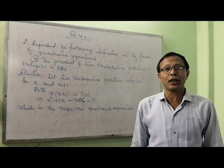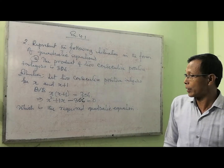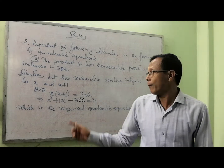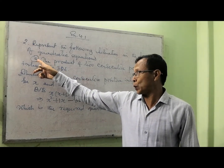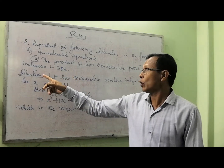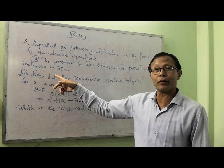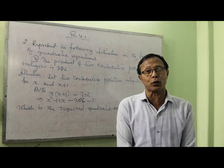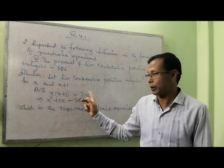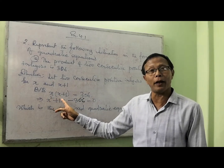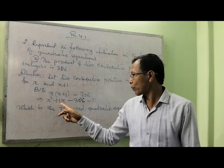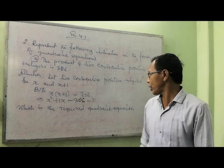From the same exercise 4.1, I pick up question number 2: represent the following situation in the form of a quadratic equation. From question number 2, I am taking roman numeral 2. The question is: the product of two consecutive positive integers is 306. Let the two consecutive integers be x and x plus 1. By the question: x times (x plus 1) equal to 306. Removing the bracket: x squared plus x, bringing 306 to the left gives x squared plus x minus 306 equal to 0, which is the required quadratic equation.